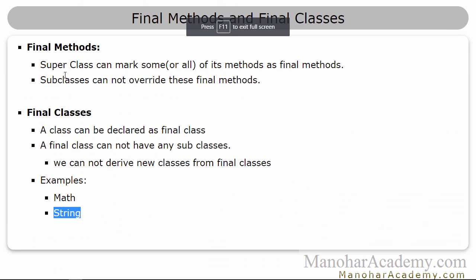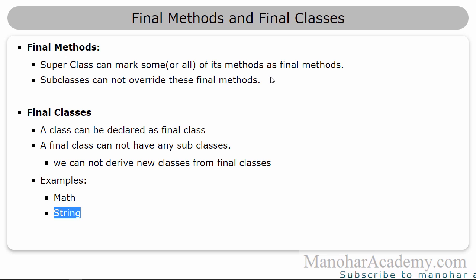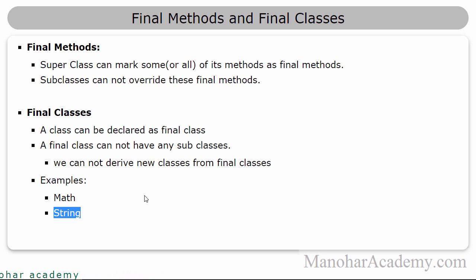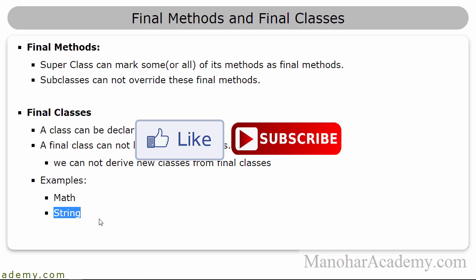To recap: a final method is a method marked with the final keyword, meaning subclasses cannot modify the behavior inherited from the superclass. A final class is a class declared as final, and no derived classes can exist — writing 'class A extends SomeFinalClass' will cause a compilation error. Examples of final classes are Math and String. If you haven't subscribed already, please subscribe, and if you found this video helpful, please like and share it with your friends. Thank you for watching — see you in the next lesson.